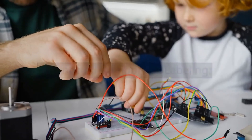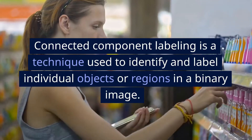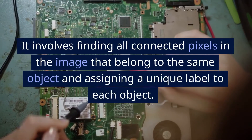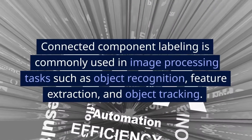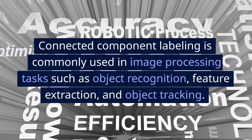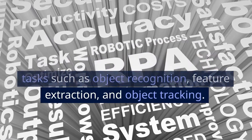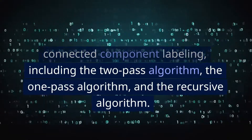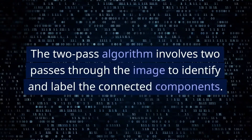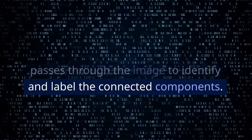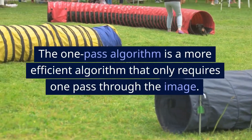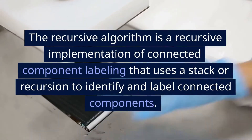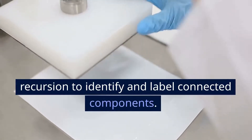Connected component labeling is a technique used to identify and label individual objects or regions in a binary image. It involves finding all connected pixels belonging to the same object and assigning a unique label to each. It is used in tasks such as object recognition, feature extraction, and object tracking. Algorithms include the two-pass algorithm, which makes two passes through the image to label connected components; the one-pass algorithm, which is more efficient; and the recursive algorithm, which uses a stack or recursion to identify and label connected components.